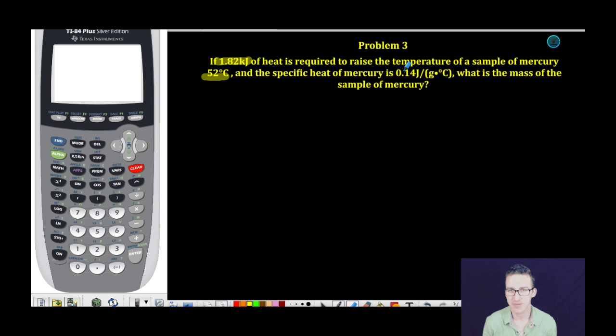and the specific heat of mercury is 0.14 joules per gram degree Celsius, what is the mass of the sample of mercury? So again, applying this Q equals MC delta T formula, this time we're solving for the mass part of this equation.